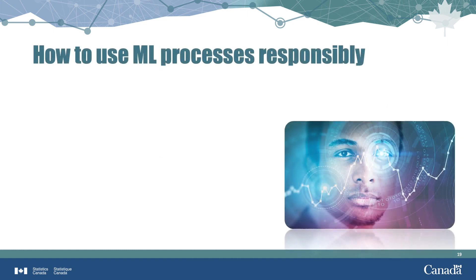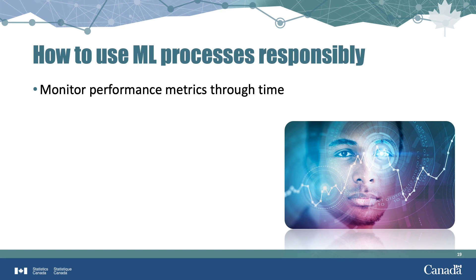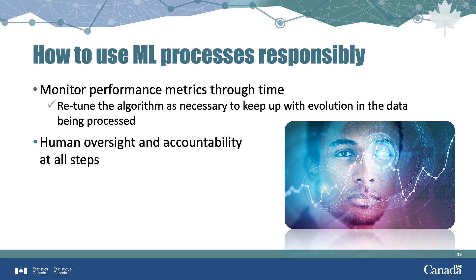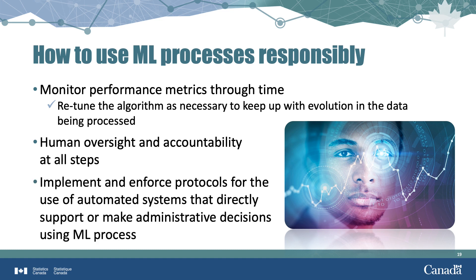It's not enough to simply build responsible machine learning processes — they also have to be used responsibly. This means monitoring performance metrics through time. There could be evolution in the data processed by the algorithm, so it's important to monitor performance and retune the algorithm when necessary. There should be human oversight and accountability at all steps — people are ultimately responsible for all predictions and decisions that are the output of a machine learning algorithm. For systems that directly support or make administrative decisions, it's essential to implement and enforce protocols on their use. For machine learning processes in the Government of Canada, this means ensuring compliance with the Directive on Automated Decision Making from the Treasury Board Secretariat.